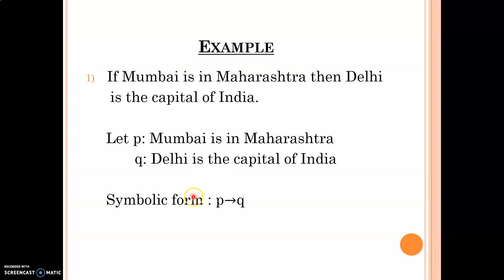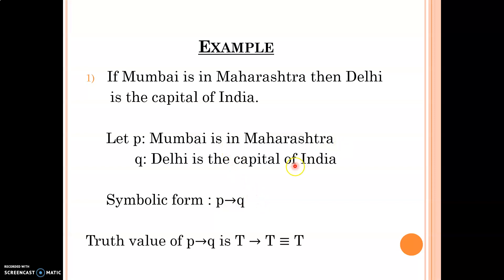The symbolic form is P implies Q. The truth value: 'Mumbai is in Maharashtra' is a correct statement so the truth value of P is true. 'Delhi is the capital of India' is also a correct statement so the truth value of Q is true. Therefore true implies true is equivalent to true, as we studied in the first row of the truth table.